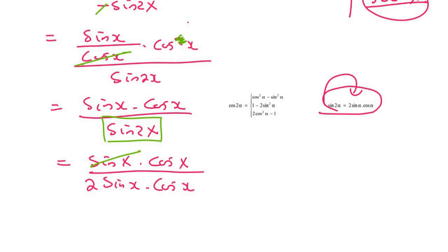And so what happens now is that this sin cancels with that, and this cos cancels with that. And so at the top we're left with 1, because there's nothing really there, so we just say 1. And then at the bottom we have a 2. And so the final answer is 1 over 2.